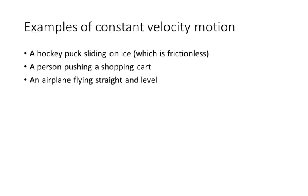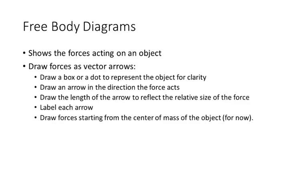So, some examples of constant velocity motion. Something like a hockey puck sliding on ice. In this class, ice is going to be considered frictionless. A person pushing a shopping cart, like if you're going grocery shopping. And then an airplane flying straight and level, which we do on a daily basis. When we want to understand what forces are acting on an object and how it's causing the object's motion to change, the first thing we're always going to do is draw what's called a free body diagram.